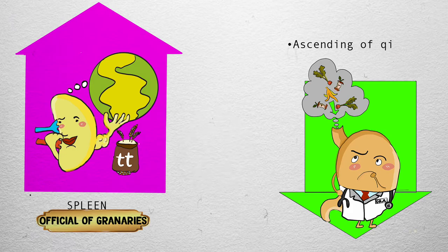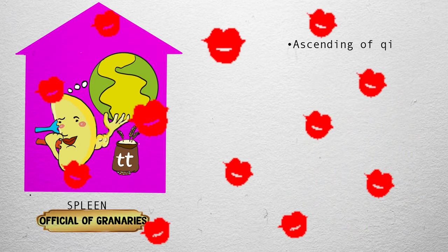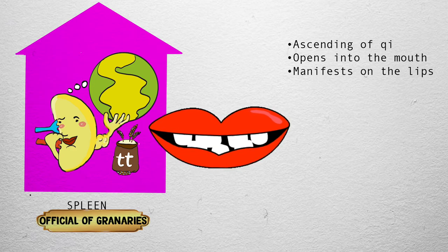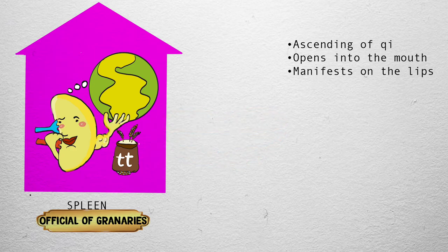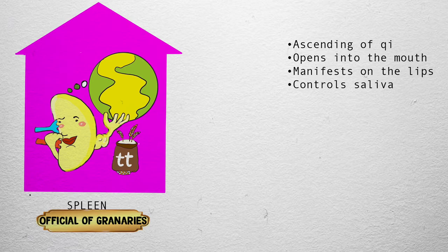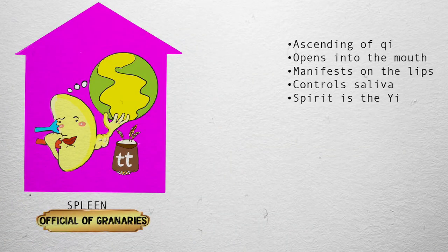Take a look at Miss Spleen's bright red lips — they're here to remind us that the spleen opens into the mouth and manifests on the lips. It's also a good time to mention that the spleen controls saliva. Miss Spleen is thinking about the world because the spirit of the spleen is the Yi, also known as the intellect. Miss Spleen is pondering deep questions, and the world here also serves a second purpose.